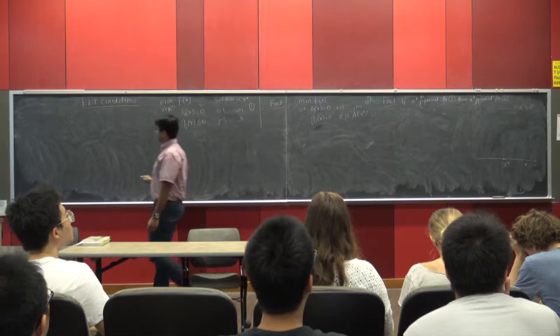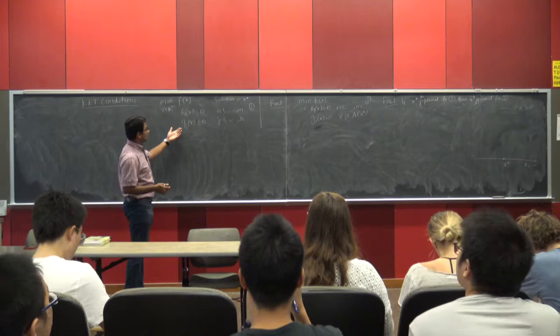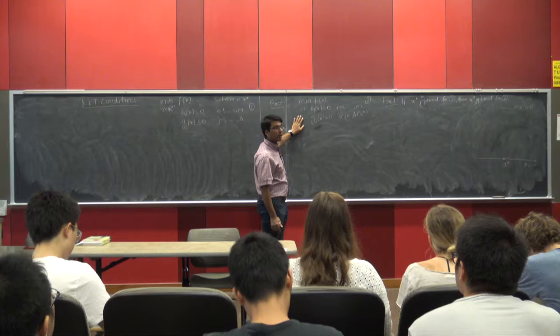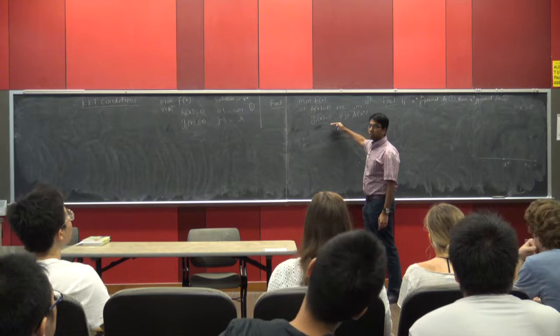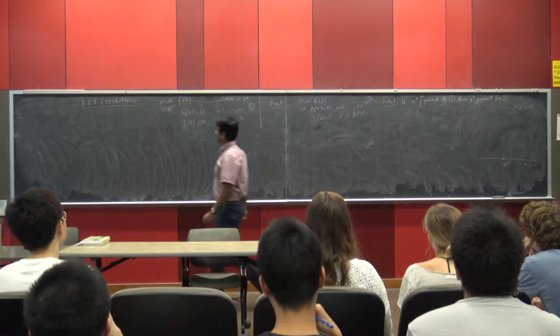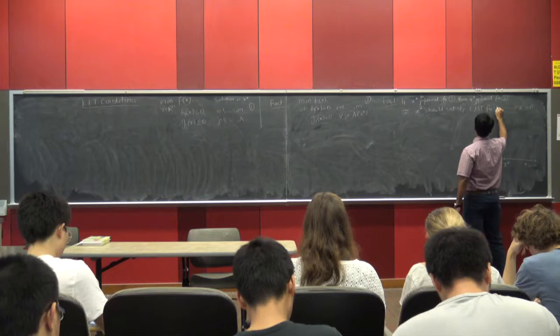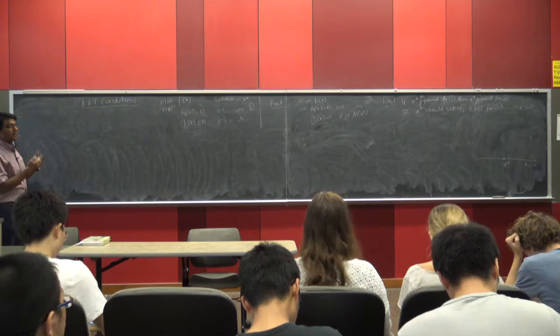We know from the Lagrange multiplier theorem what the necessary condition is when we have equality constraints. But now we have inequality constraints. Here is the idea: we can transform this problem into an equality constraint problem and then look at the necessary condition for optimality. So if x star is locally optimal for problem 1, then x star is locally optimal for problem 2 and should satisfy the Lagrange multiplier theorem for problem 2. That is pretty much the underlying idea of the KKT condition.